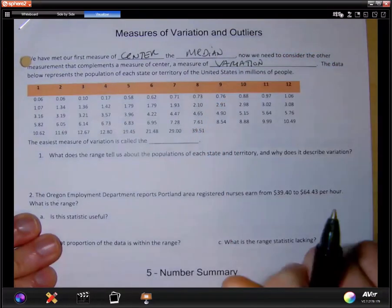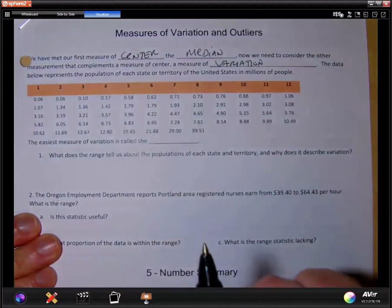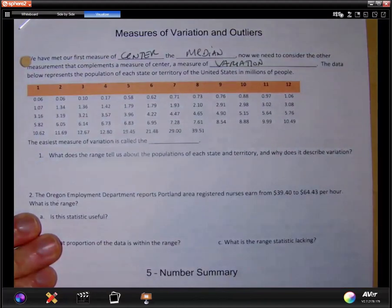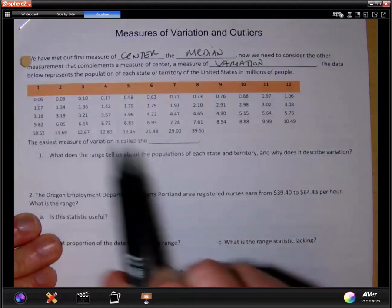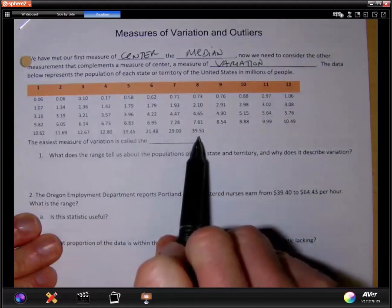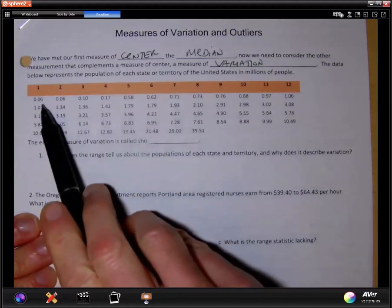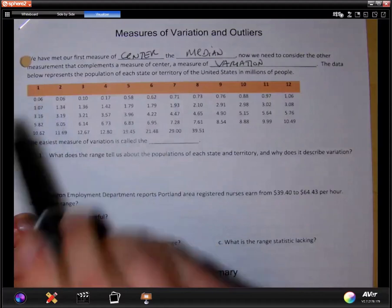The data below represents the population of each state or territory of the United States in millions of people. For example, the highest being 39.51 million, lowest here is 0.06 million.